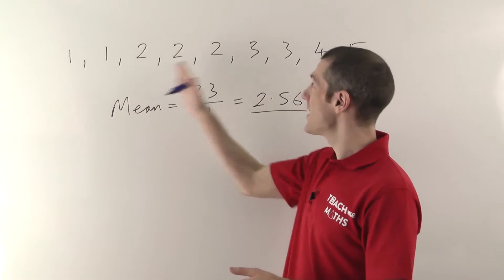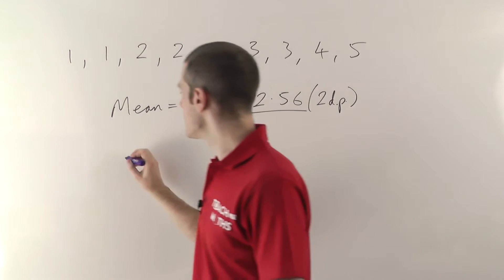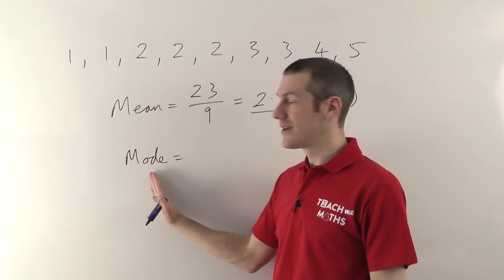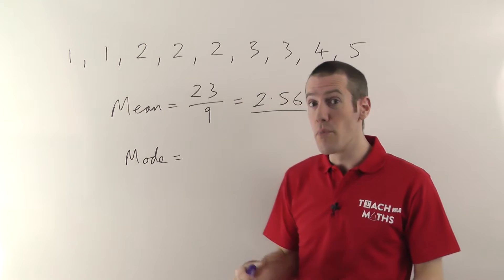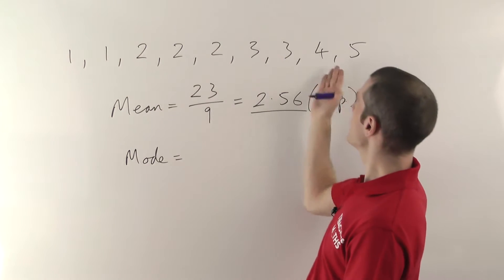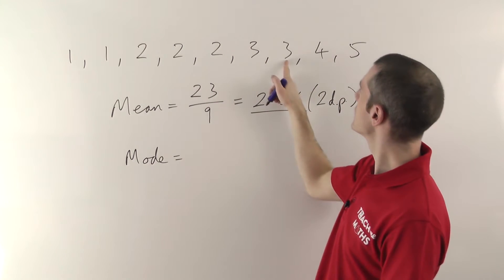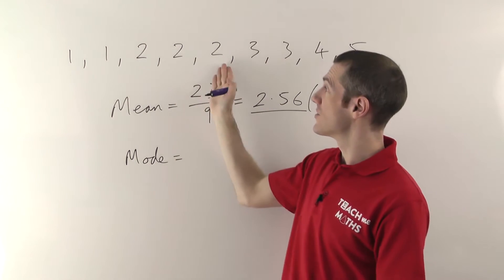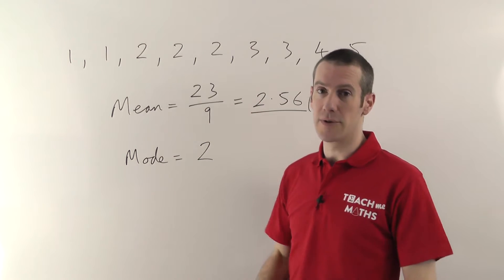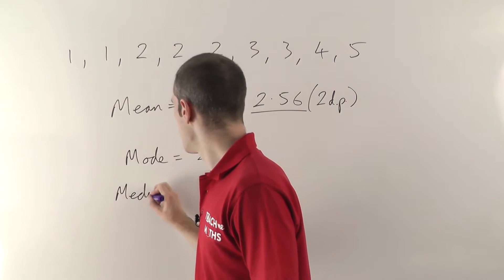That's the mean — always the same: add them all up, divide by however many numbers there are. The mode is next. The mode is the number that occurs the most — that's how I remember it, 'mode' is 'most.' Looking at our set: two ones, three twos, two threes, one four, one five — there are more twos than any other number, so the mode is two.